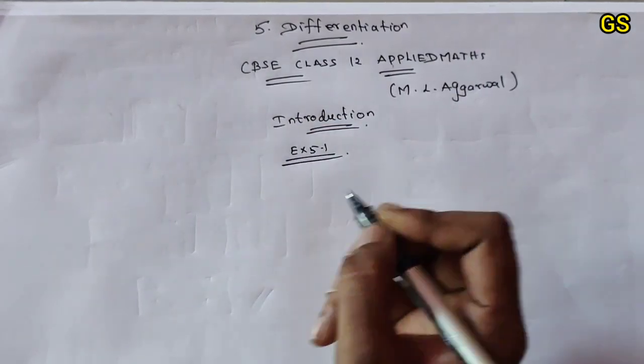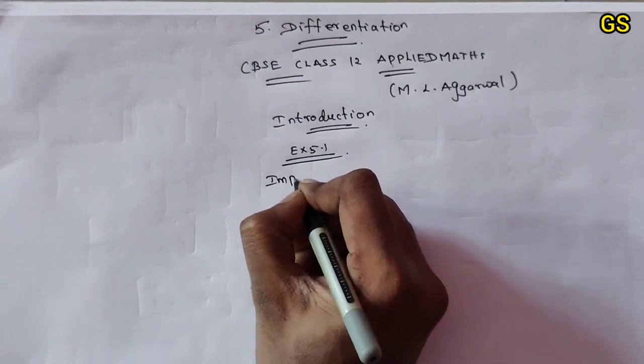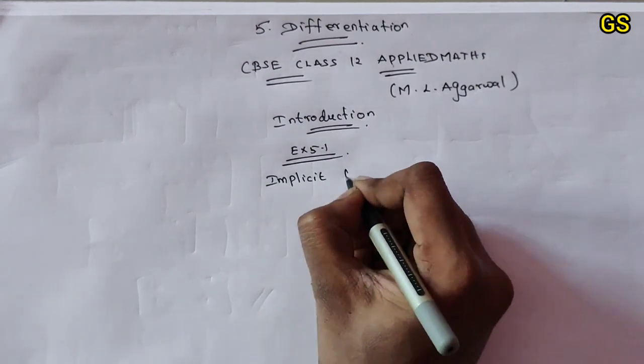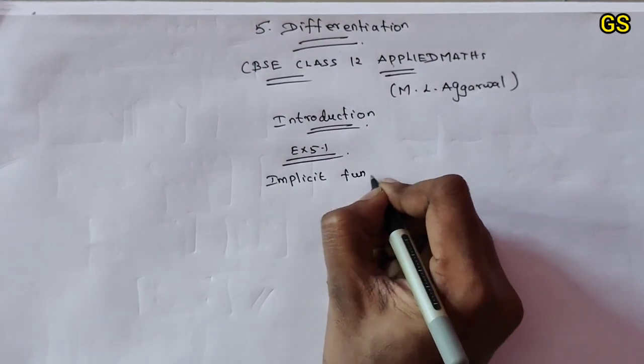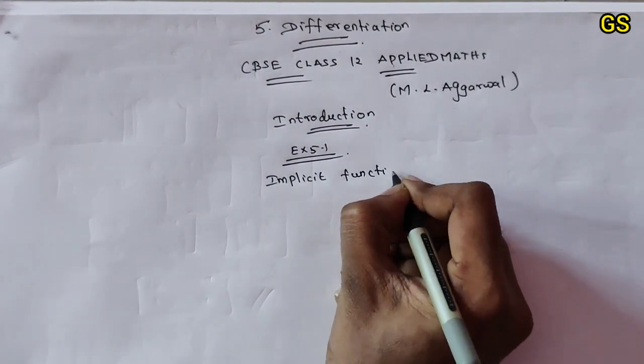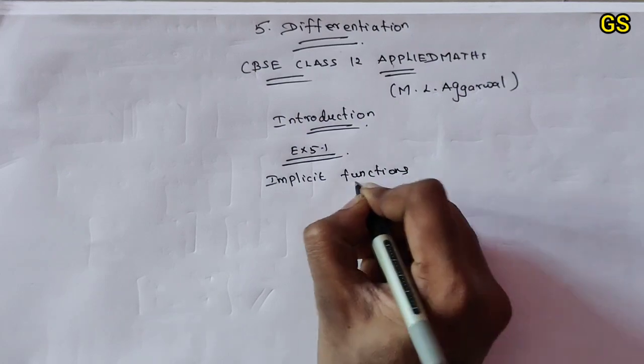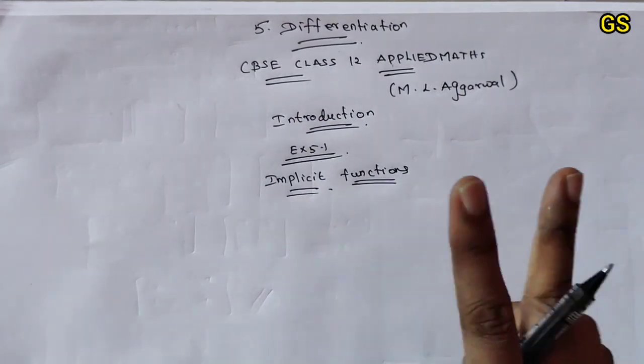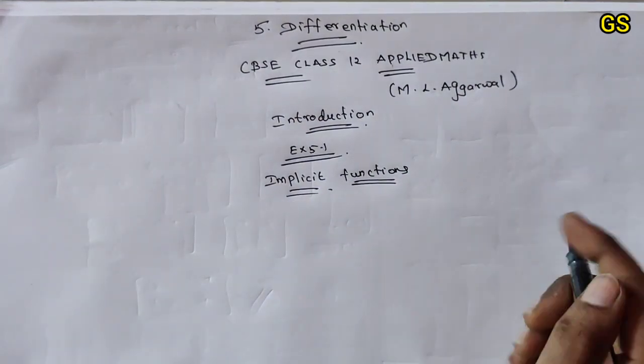Here is Exercise 5.1 - Implicit functions. So we will talk about two types of functions.